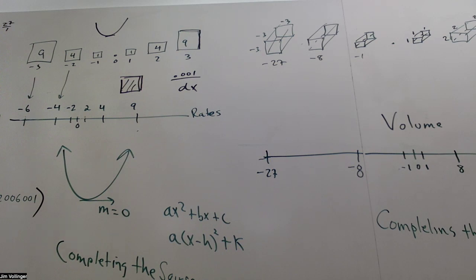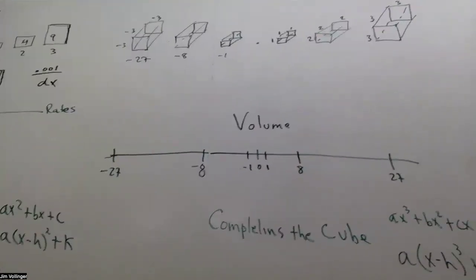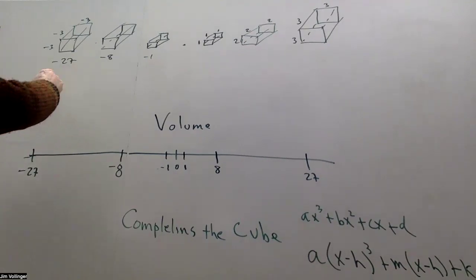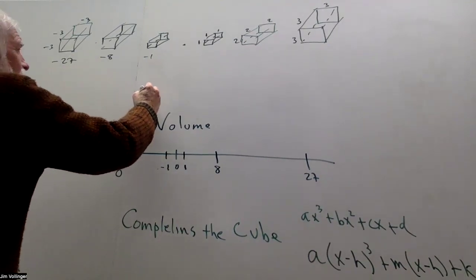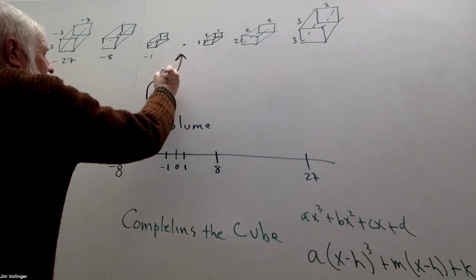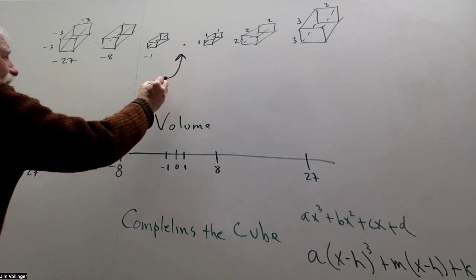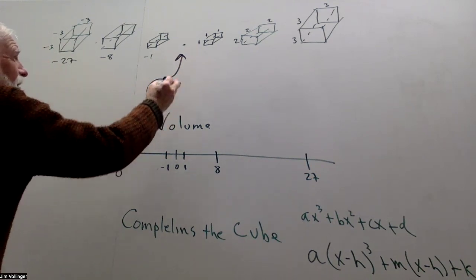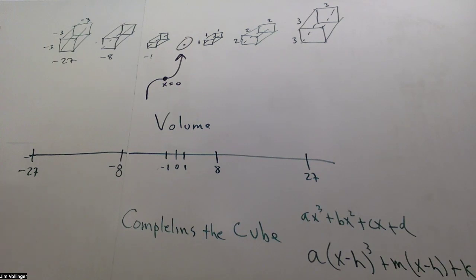And at the cubic, if we don't have a cube, if you don't have a cube, you've got a cubic graph that looks like this. And again, it's flat at x equals 0. Why? There's no cube there.